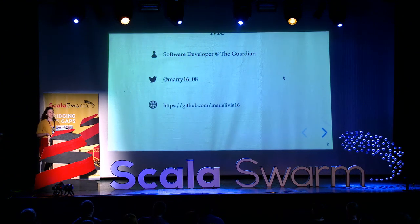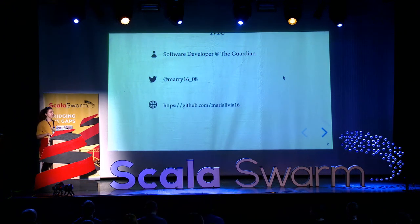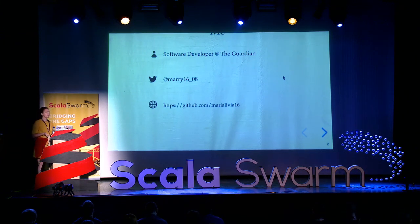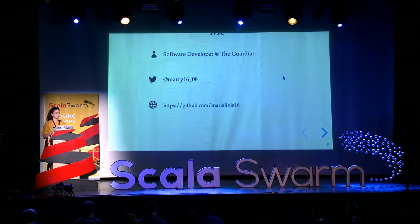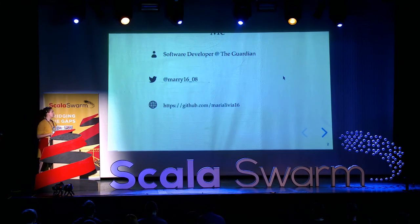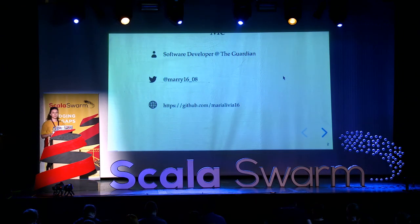A little bit about myself first. I joined the Guardian almost two years ago as a graduate software developer. Ever since, I changed teams three times as part of my rotations. I was first part of the content API team, where I was first introduced to Scala and functional programming. I then left the team seven months later to join the apps team, where I used Objective-C and Swift, but then I decided to go back to my first love, Scala. Now I'm part of the editorial tools team, where together with my colleagues we develop the tools our editorial team is using every day.